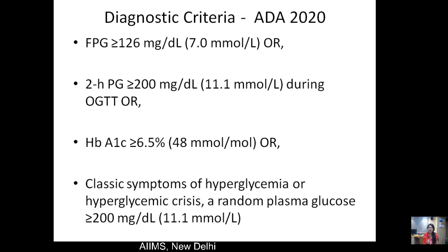Brushing up the diagnostic criteria given by the American Diabetes Association 2020 guidelines for type 2 diabetes mellitus: a fasting plasma glucose of ≥126 mg/dL; or a 2-hour post-prandial glucose of ≥200 mg/dL during an oral glucose tolerance test using 75 grams of anhydrous glucose; an HbA1c of ≥6.5%; or a random plasma glucose ≥200 mg/dL with classical features of hyperglycemia — polyuria, polyphagia, and polydipsia — or presenting in a hyperglycemic crisis.